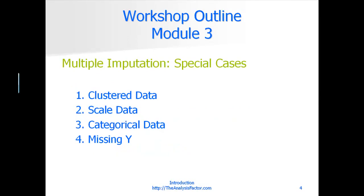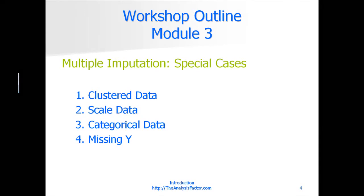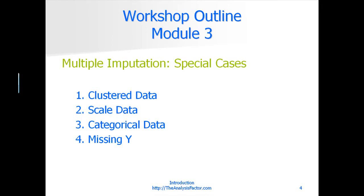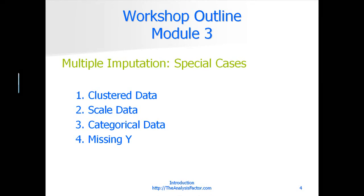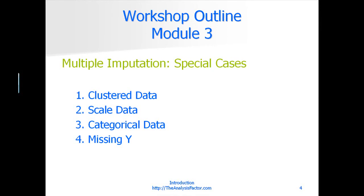In module three we'll finish up multiple imputation with some special cases. Once you're actually implementing multiple imputation you discover a million little details and issues you have to consider. It's these special cases — issues that don't match the textbook — where you, the data analyst, often get stuck because you're not exactly sure what to do. So in this module we'll explore multiple imputation in four common situations where we have to move beyond the textbook perfect continuous normal data.